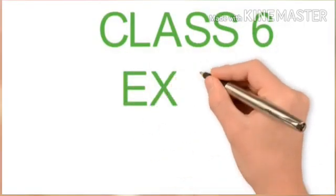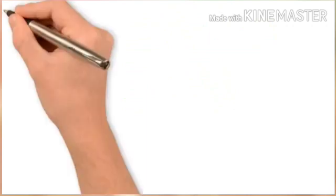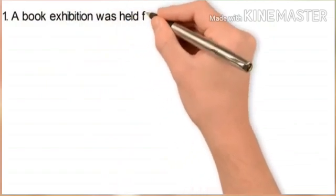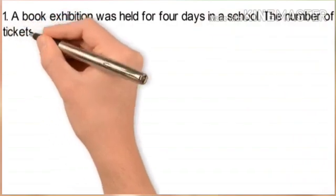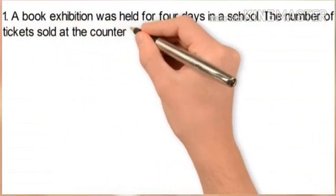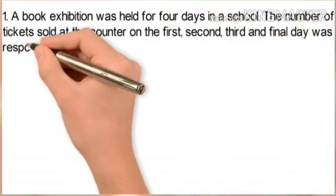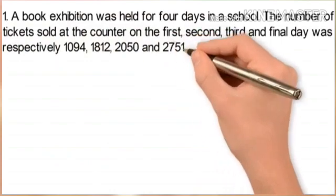Class 6th, Exercise 1.2. For this problem, a book exhibition was held for four days in a school. The number of tickets sold at the counter on the first, second, third and final day was respectively 1094, 1812, 2050 and 2751.